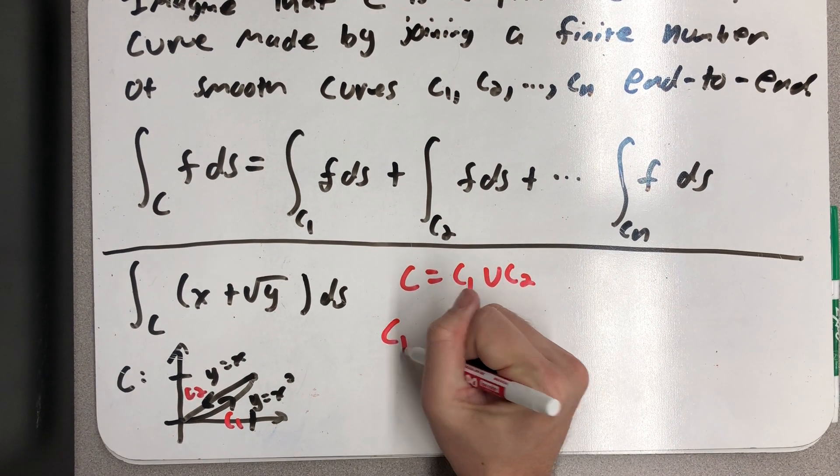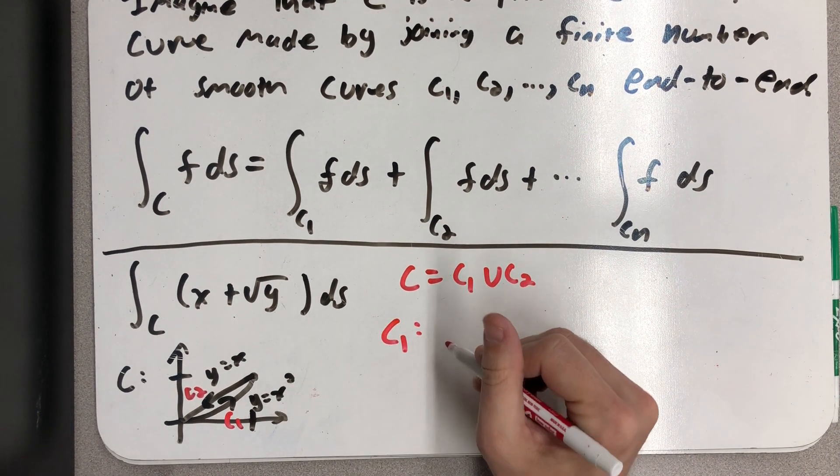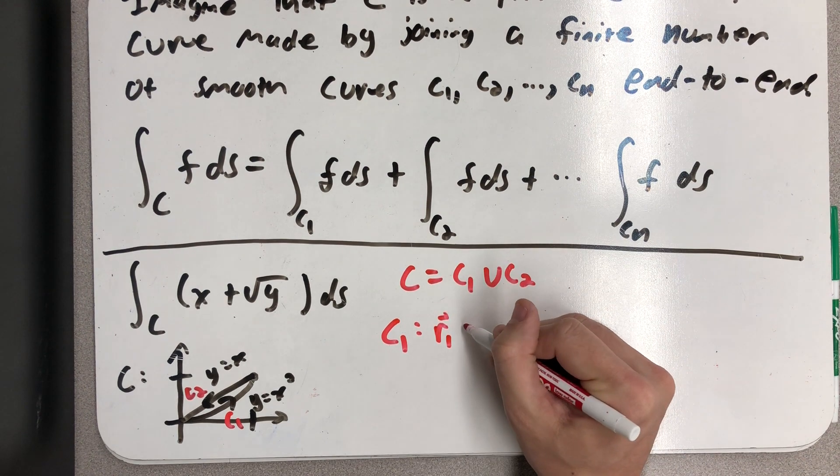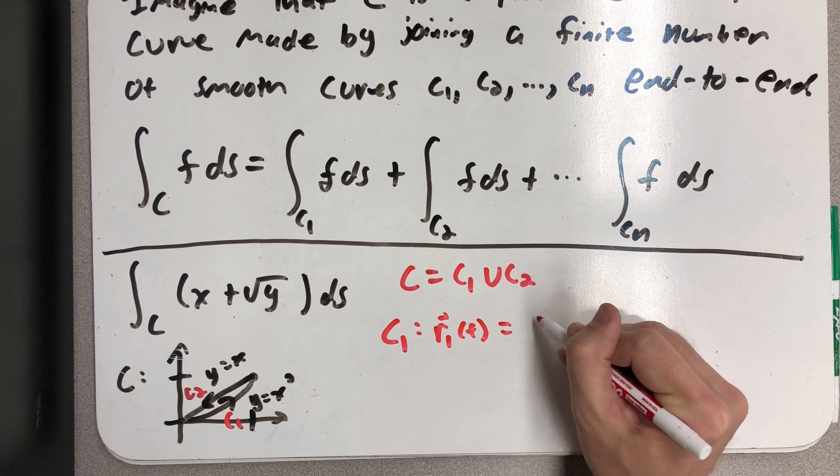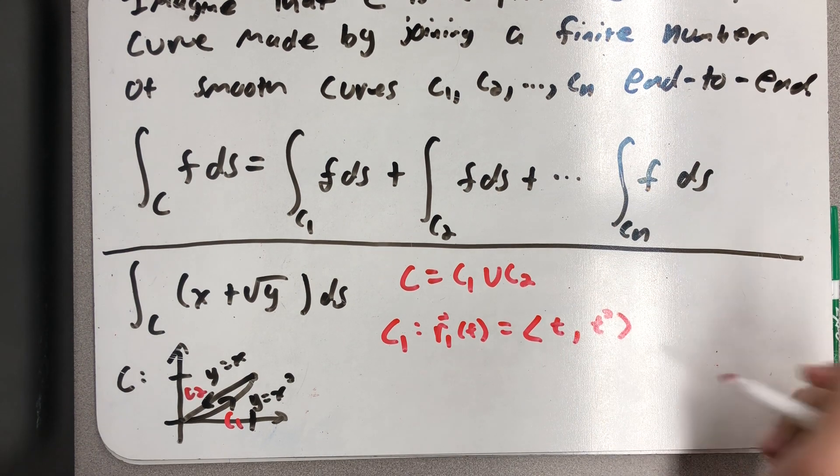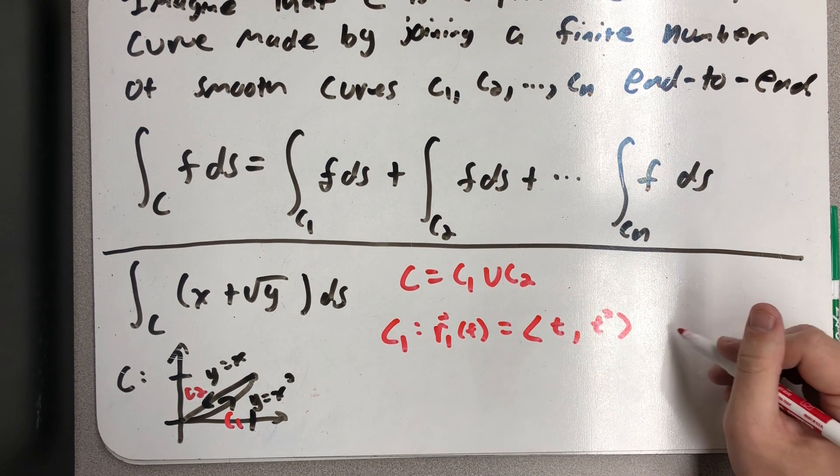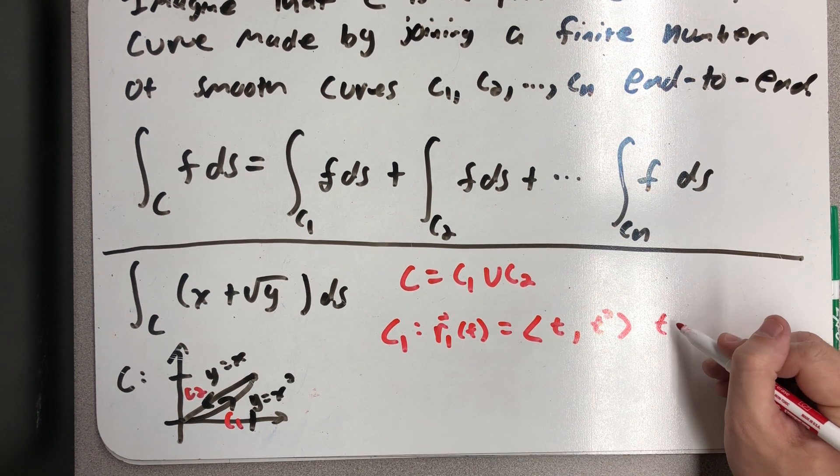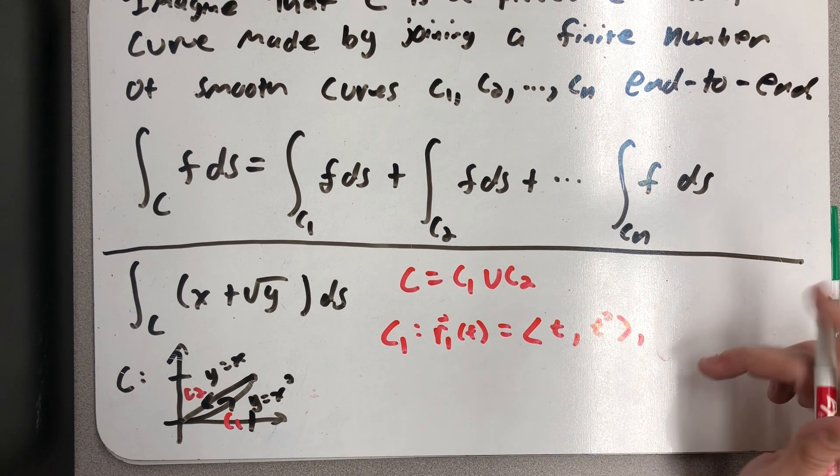So the path C1 is a parabolic path. I need a parameterization for it. I'm going to call that R1. Well, that's (t, t²), and clearly when t is between zero and one.